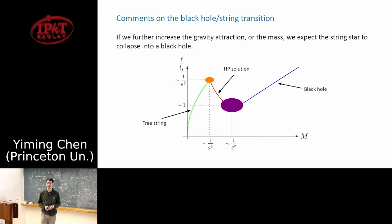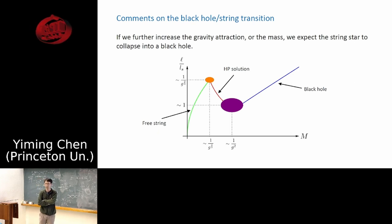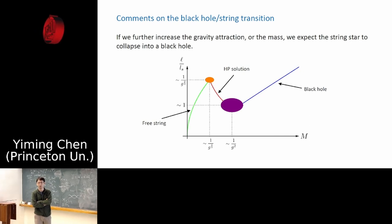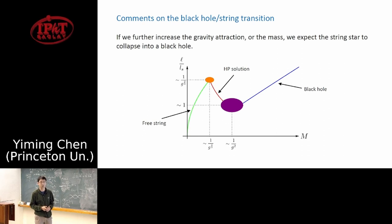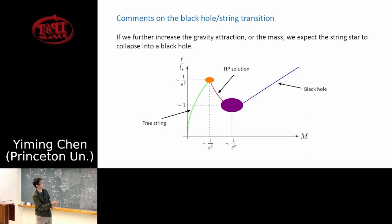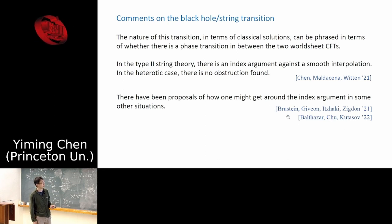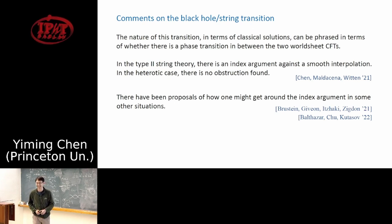On the purple blob and horizon formation: asked whether these approaches can explain horizon formation, the speaker acknowledges this is the ultimate goal but admits there is no clear understanding of what happens in the purple blob. Recent discussions by Kutasov and collaborators, as well as upcoming work discussed by Rami, may shed more light on what happens at the transition point.